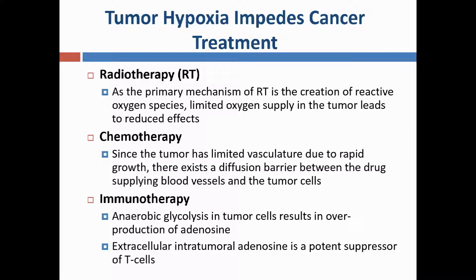Tumor hypoxia impedes cancer treatment. As the primary mechanism of radiation is the creation of reactive oxygen species, a diminished oxygen supply in the tumor leads to reduced effects. Since the tumor has limited vasculature due to its rapid growth, there exists a diffusion barrier between the drug supply blood vessels and the tumor cells, leading to treatment resistance for a number of anti-cancer agents.